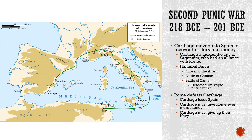The Second Punic War starts a bit later. Since Carthage had lost those islands during the First Punic War and was trying to recover their wealth, the Carthaginians sent the commander from that first conflict — a guy named Hamilcar — to Spain. In Spain, he was able to conquer quite a bit of territory and gain some money, but eventually he was killed.